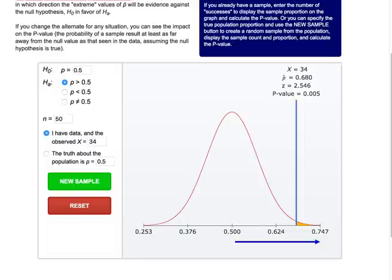The yellow area shows the probability of getting 68% that we observed or values that are even more extreme or larger, if the coin were really fair. This probability is the p-value, which is very small, only 0.005 or about 5%.